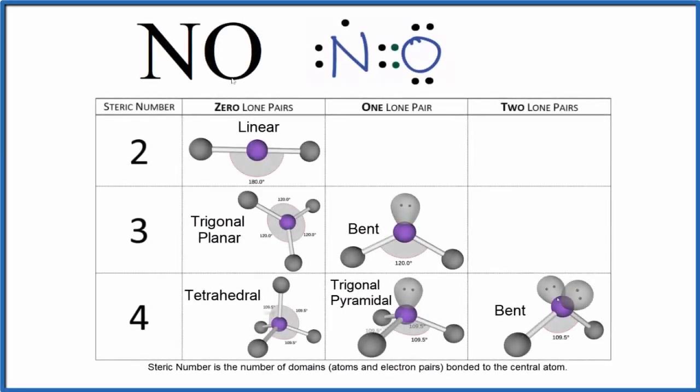In this video, we'll look at the molecular geometry for NO. This is nitric oxide or nitrogen monoxide.